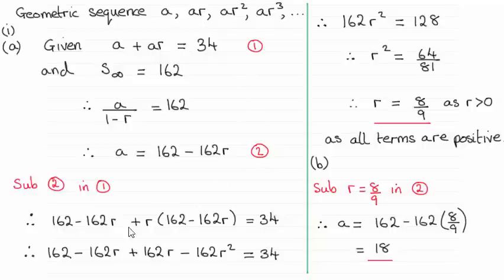So doing that we get this line here and then expanding this bracket gives me this line and simplifying it brings me down to r squared equals 64 over 81.